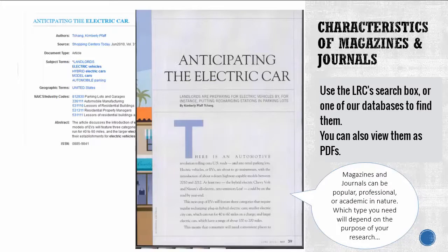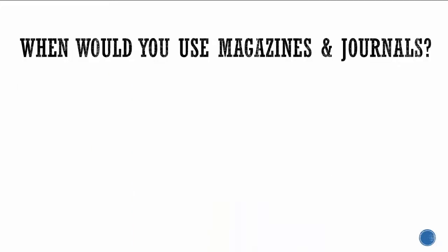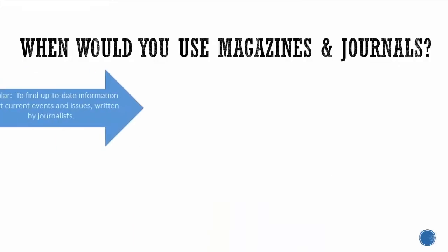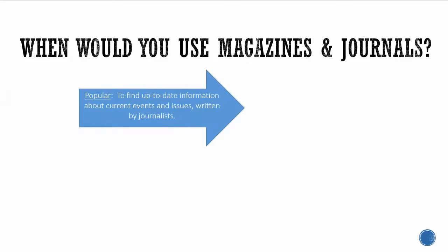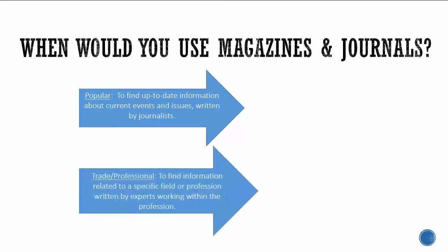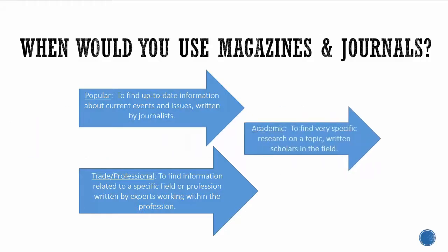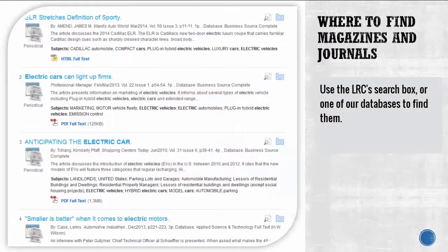Which type you need will depend on the purpose of your research. You would use popular magazines to find up-to-date information about current events and issues written by journalists. You'd use trade or professional magazines to find information related to a specific field or profession, written by experts working within the profession. You'd use academic journals to find very specific research on a topic, written by scholars in the field.